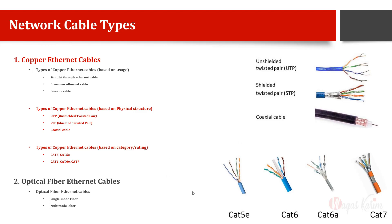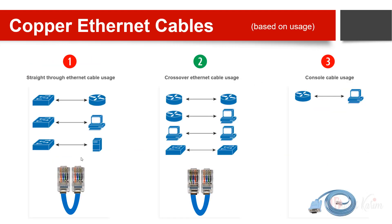We can also classify copper cables based on their category, rating, or quality. Cat5 has less quality, thinner cables, no extra covers or plastic cladding, making it less expensive. Cat6 is better than Cat5, Cat6a is better than Cat6, Cat7 is better, and Cat8 onwards continues to improve. Higher categories have extra plastic or metal shielding to avoid crosstalk interference.